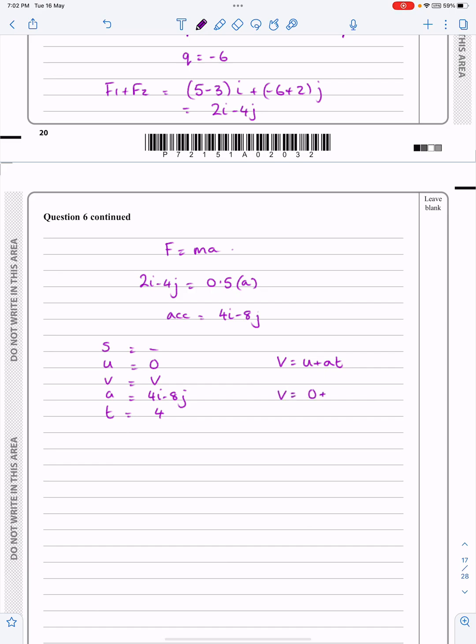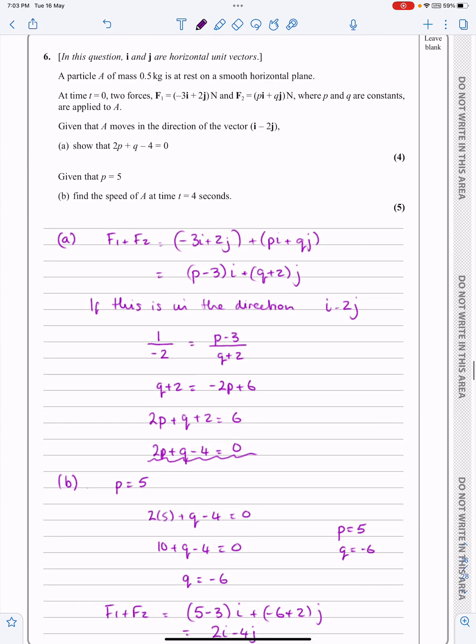V is what I'm interested in so I haven't got that one. But I've got U as being 0. I've got A as being 4I minus 8J and T as being 4. I'm going to do that in a slightly tidier way when I'm doing that. So it's 4 lots of 4I minus 8J there. So V works out to be equal to 16I minus 32J. Let's just go and check what we're looking for.